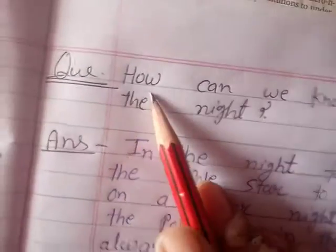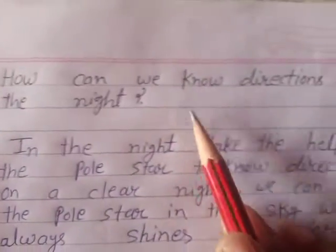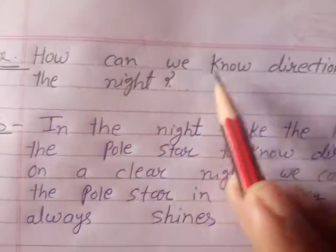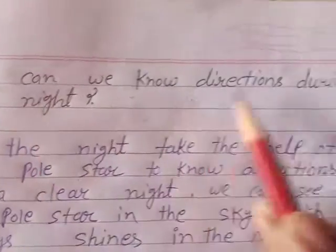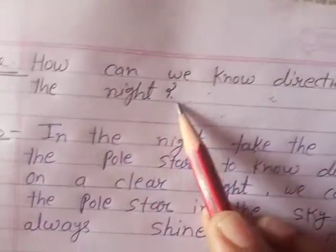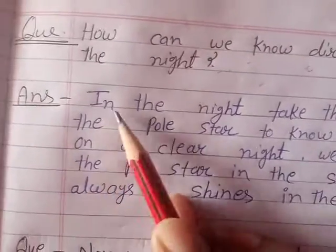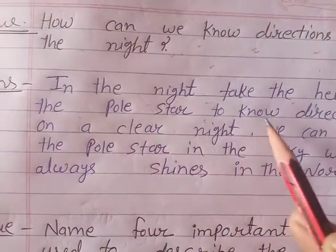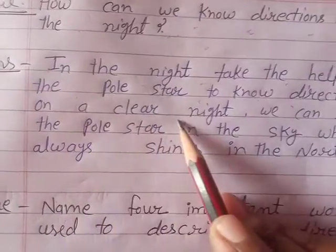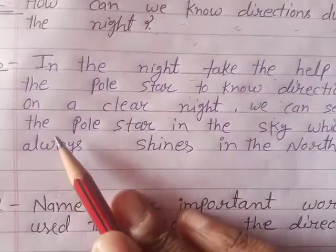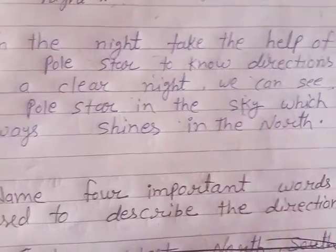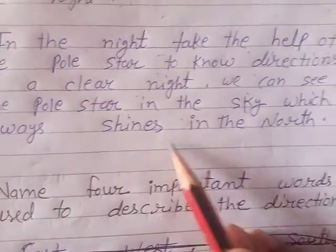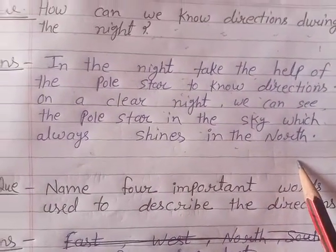Question number 4: How can we know direction during the night? Answer: In the night, take the help of the pole star to know directions. On a clear night, we can see the pole star in the sky, which always shines in the north.